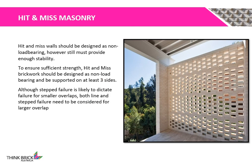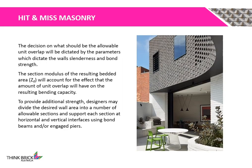It is common practice to design Hidden Mist Walls as non-load bearing; however, they still must provide enough stability for other small loads such as wind loads. They must be supported on at least three sides. Both stepped and line failure need to be considered for both small and larger overlaps. Allowable unit overlap is affected by parameters which also affect wall slenderness and bond strength. The section modulus of the resulting bedded area accounts for the effect of unit overlap on bending capacity. Designers divide the desired wall area into smaller sections supported at horizontal and vertical interfaces using bond beams or engaged piers.